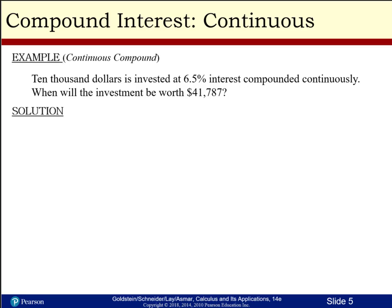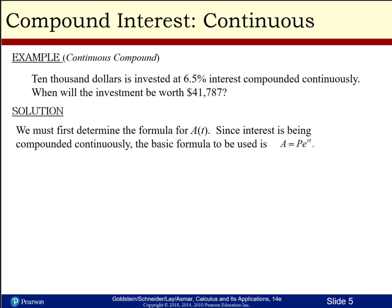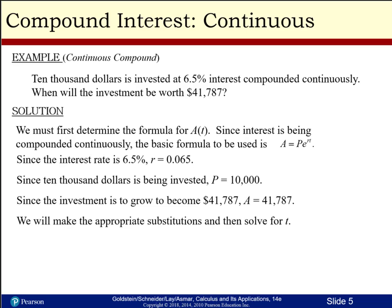Here's an example of continuous compounding. Once it says continuous compounding, I'm going to use the PERT formula. Let's say we have $10,000 invested at 6.5% — I know it's PERT — when will the investment be worth $41,787? First, put the PERT formula down. Since the rate is 6.5%, r is going to be 0.065, and since we have $10,000, P equals $10,000.